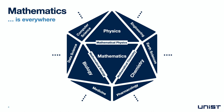At intersections to the three major natural sciences — physics, biology and chemistry — mathematics has its own sub-disciplines: mathematical physics at the intersection of mathematics and physics, mathematical chemistry at the intersection of mathematics and chemistry, and mathematical biology at the intersection of mathematics and biology. Mathematics also provides fundamental tools in the engineering sciences and forms the theoretical foundation for computer sciences, including machine learning and artificial intelligence.